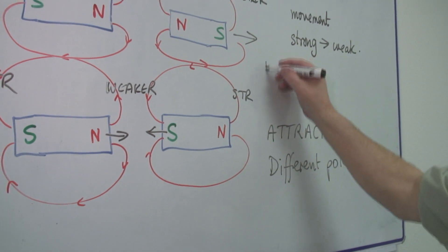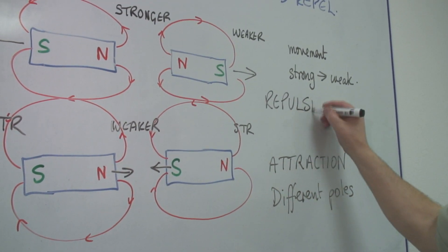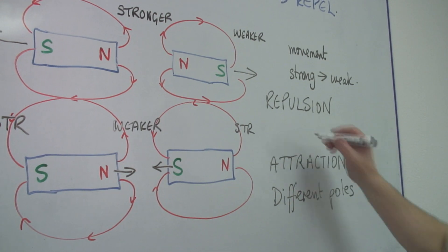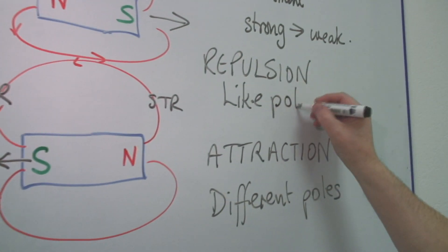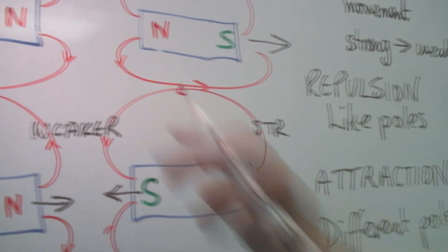And we get repulsion if we have got like, what we say, like poles or similar poles. That is, north and north together.